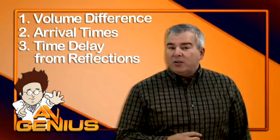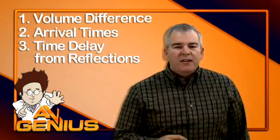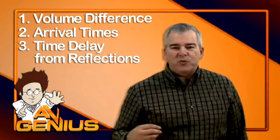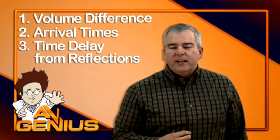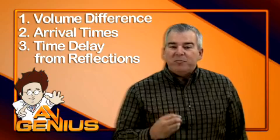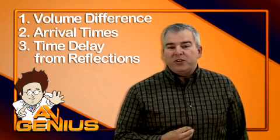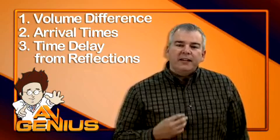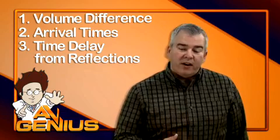Number three, your brain uses the time delay and frequency changes that occur when the sound is reflected around the room or environment you're in. It uses this information to help locate the sound's three-dimensional position in the room and to determine what the room or the environment is like.